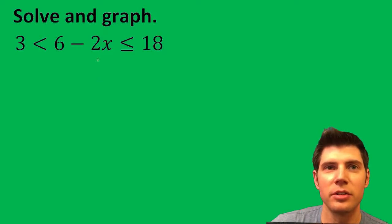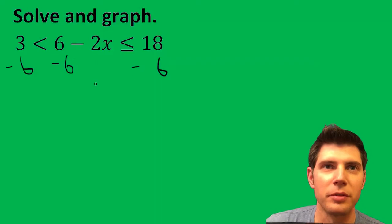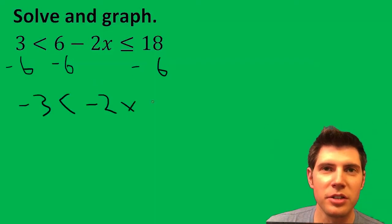So first we're going to subtract 6 from all three of them. We get -3 < 2x ≤ 12.